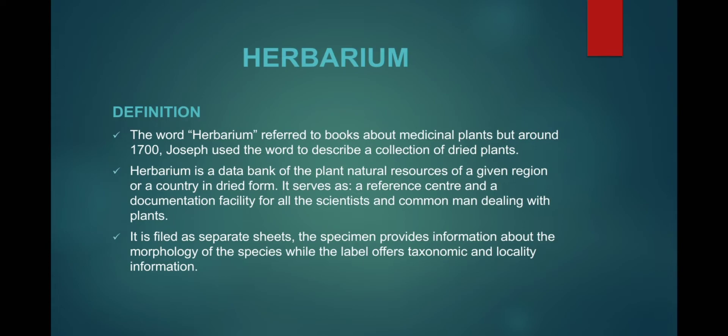Herbarium — definition. The word herbarium originally referred to books about medicinal plants. But around 1700, Joseph used the word to describe a collection of dried plants. Herbarium is a data bank of the plant natural resources of a given region or country in dried form. It serves as a reference center and documentation facility for all scientists and common people dealing with plants.